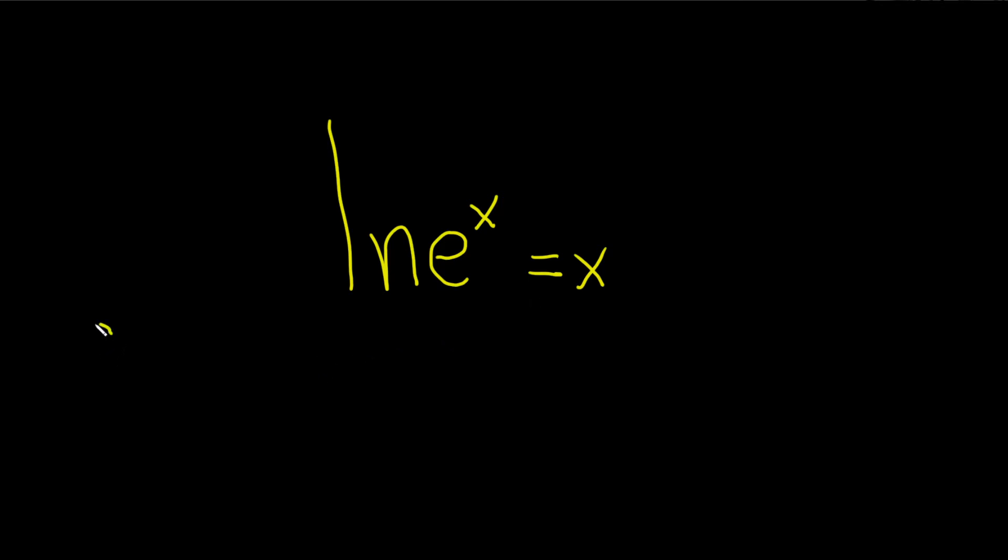So first let's define a function f of x and we'll say that's equal to the natural log of x, and we'll define g of x to be equal to e to the x. These are inverse functions, that means they undo each other when you compose them.